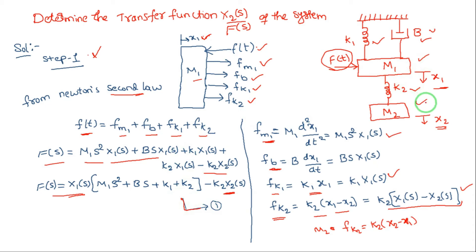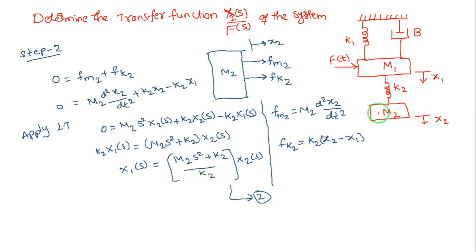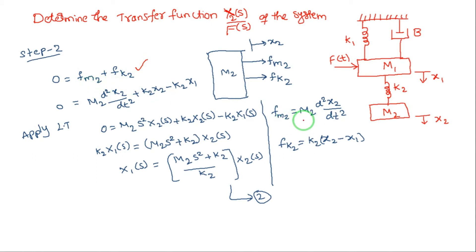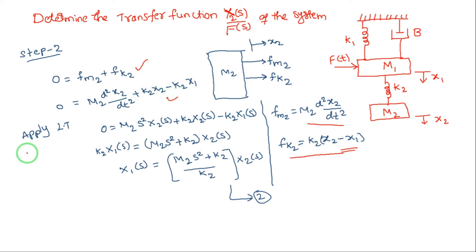Step 2: write the equations for mass m2. For m2, only a spring k2 is connected. The opposing forces are fm2 and fk2. There is no applied force, so the sum of applied forces is zero, which equals fm2 + fk2. The force fm2 = m2 * d²x2/dt², and fk2 = k2 * (x2 - x1), the difference between the two displacements.